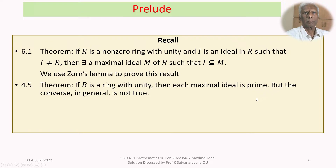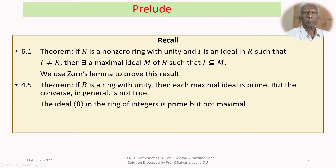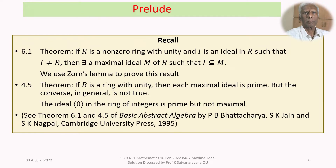What about the converse? The converse in general is not true. An example: the ideal generated by zero in the ring of integers is a prime ideal but it is not a maximal ideal. So let us now get into the problem and discuss the solution in detail.